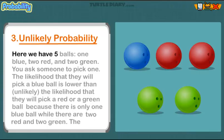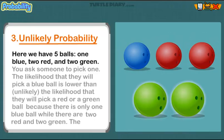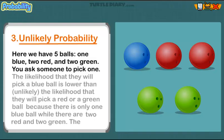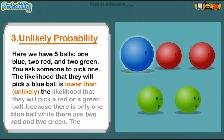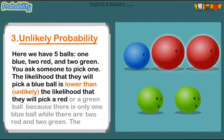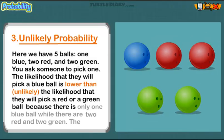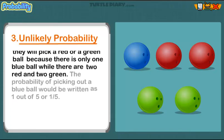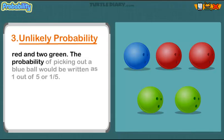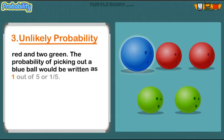Here we have five balls: one blue, two red, and two green. You ask someone to pick one. The likelihood that they will pick a blue ball is lower than the likelihood that they will pick a red or a green ball, because there is only one blue ball while there are two red and two green. The probability of picking out a blue ball would be written as one out of five, or one-fifth.